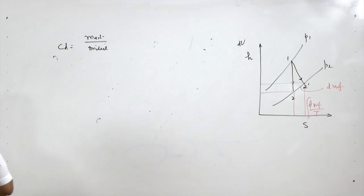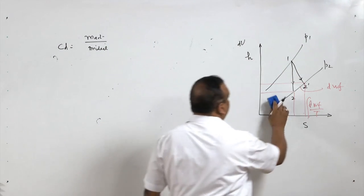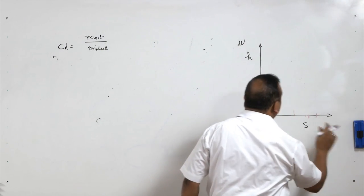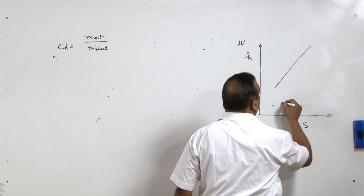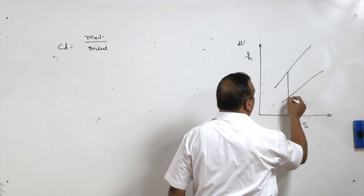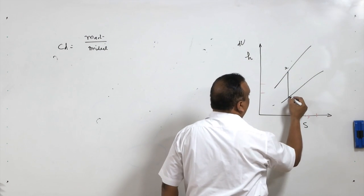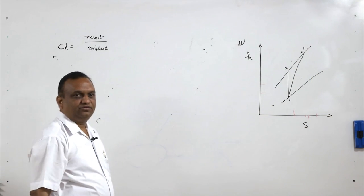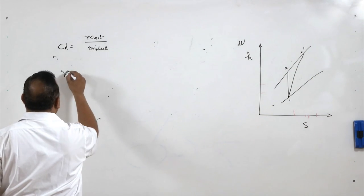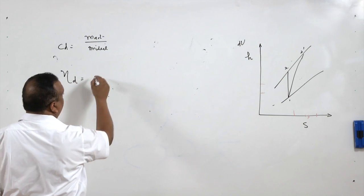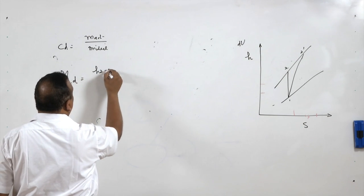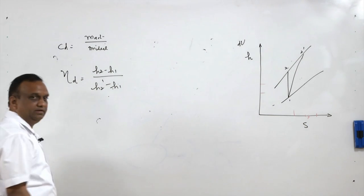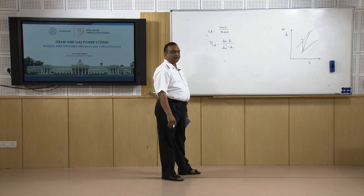In the case of a diffuser, pressure energy is increased at the cost of kinetic energy. The process goes from state 1 to state 2 dash. So the efficiency of the diffuser is (h2 minus h1) divided by (h2 dash minus h1).